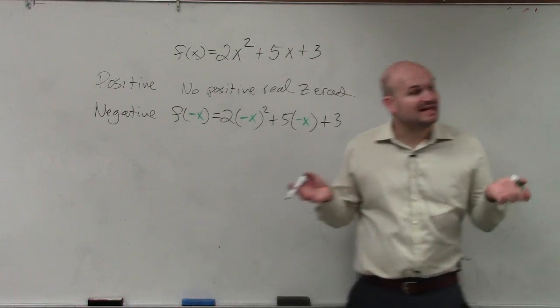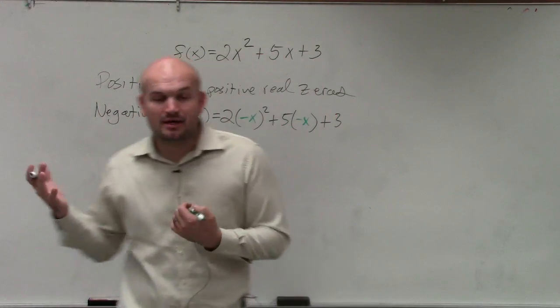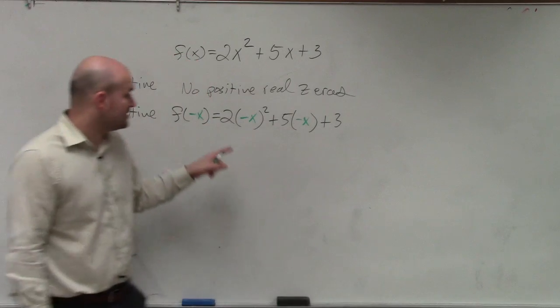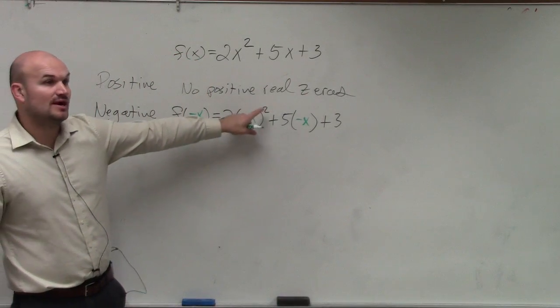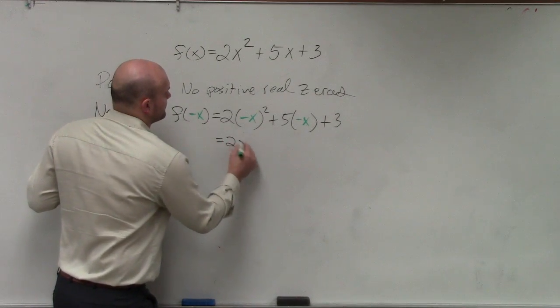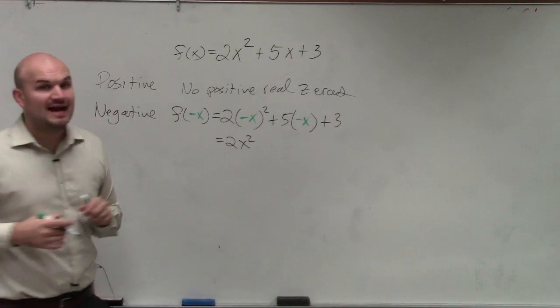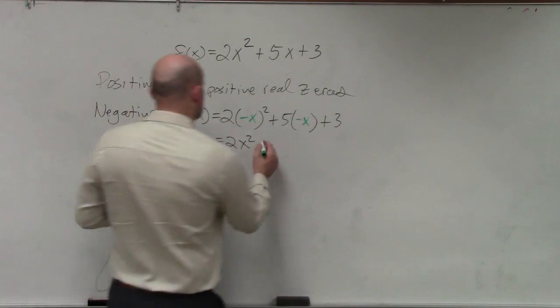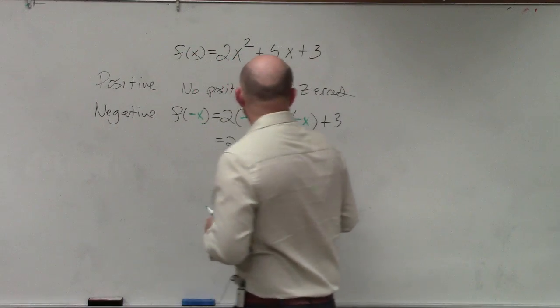Any time you have a negative term raised to an even power, that's always going to be positive. So negative x squared is positive x squared. Positive x squared times 2 is 2x squared. Negative x times 5 is negative 5x. And then we have plus 3.